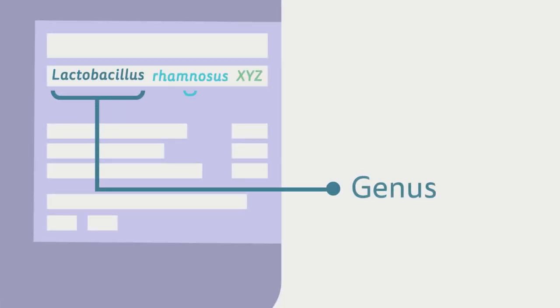Each probiotic should be described by a genus and species name, and then, even more specifically, by a strain designation.